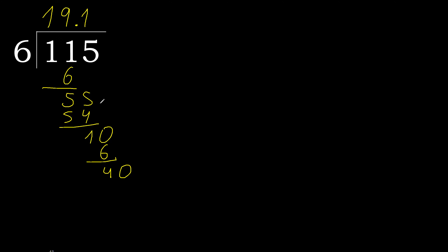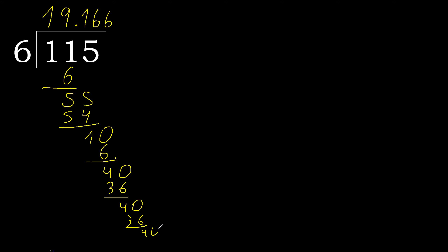The decimal point is here. 40. 6 multiplied by 7 is greater, multiply by 6: 36. Subtract. Complete. 40 again. 6 multiplied by 6 is 36. Subtract. Complete.